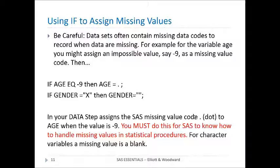We can use an if statement to do that, like if age is equal to negative 9, then age equal dot. In the same way for a character variable, if gender equal X, where X was the missing value code, then gender equal blank, which is represented by two quotes. So that's a very common thing to do, and you need to be careful of that and make sure you set all the missing value codes in any data set before doing any analysis.